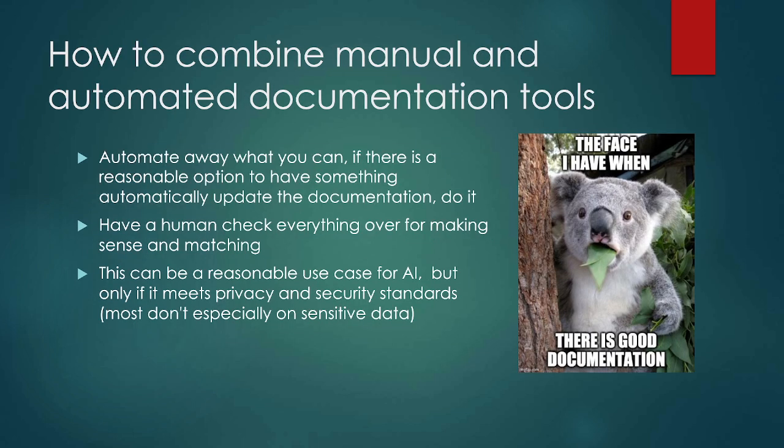One of the things you can do is automate whatever you can, because updating documentation can be really difficult. So if there's a reasonable way to automate something, it's worth doing. But you also have to make sure you're checking it — don't just say, oh I've automated this all away so everything's going to be great. Make sure you're actually going back in and checking: did this actually work the way I think it's going to work?